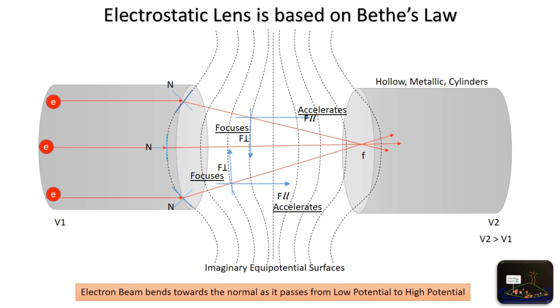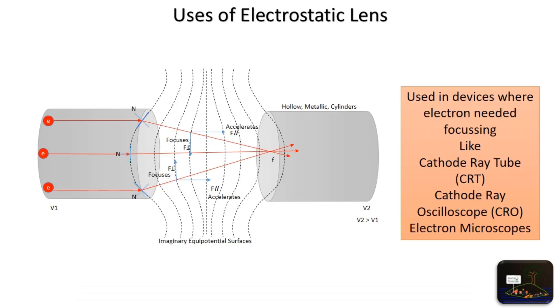Electron lens is used in devices where electrons are needed to be converged or focused on a point, like cathode ray tube, cathode ray oscilloscope, and electron microscopes.